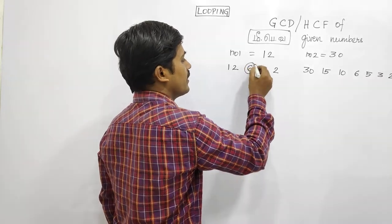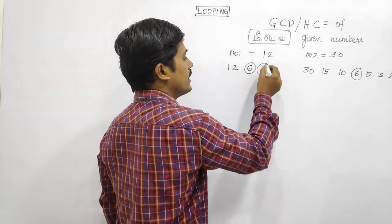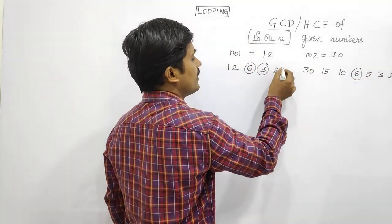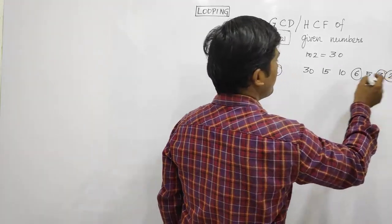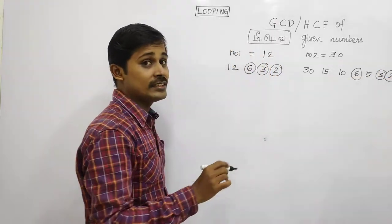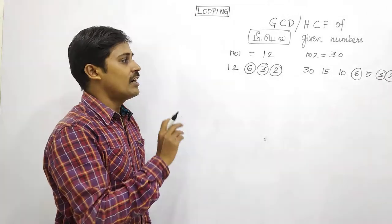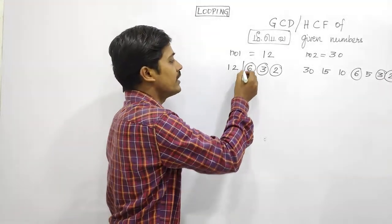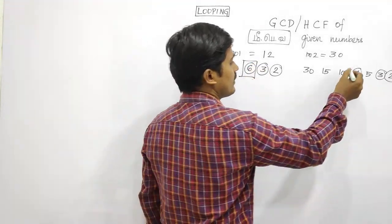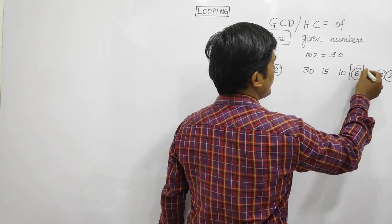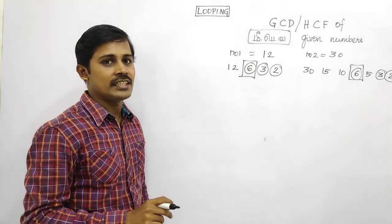The common divisors are 6 and 3. So what is the greatest common divisor? 6 is the greatest common divisor. That is the highest common divisor of 12 and 30.